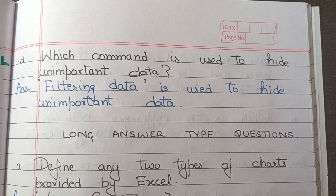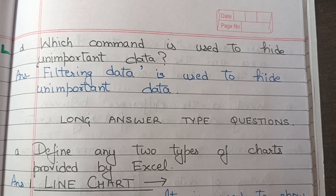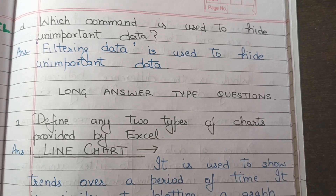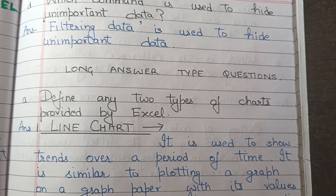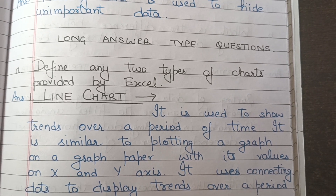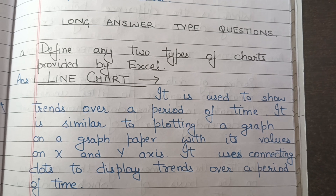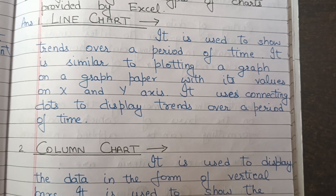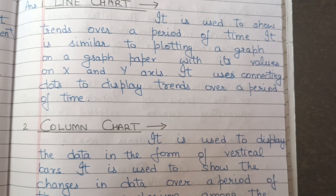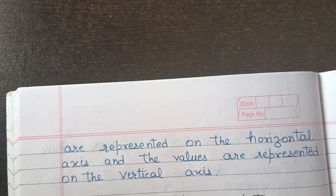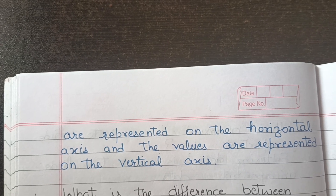Define any two types of charts provided by Excel. The first is the line chart — it is used to show trends over a period of time, similar to plotting a graph on graph paper with values on the x and y axis, and it uses connecting dots to display trends. The next is column chart — it is used to display data in the form of vertical bars, showing changes in data over time or comparisons among different data items. The categories are represented on the horizontal axis and the values on the vertical axis.